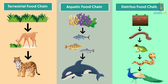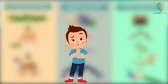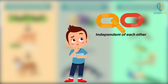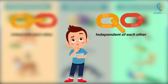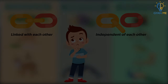So students, we have now learnt about different types of food chain. Now the question is: are these food chains independent of each other, or are they linked with each other in one ecosystem or the environment? Think about it, and we will discuss this in our next video.